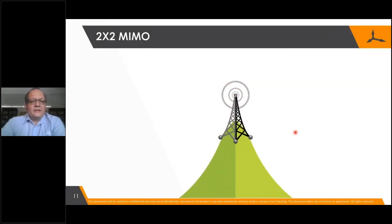One way to increase data throughput — in other words, pumping more bits per symbol — is dependent on signal to noise. The other way is to use MIMO: multiple input, multiple output.